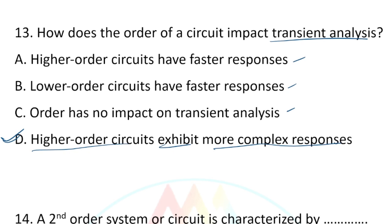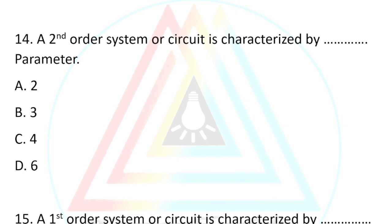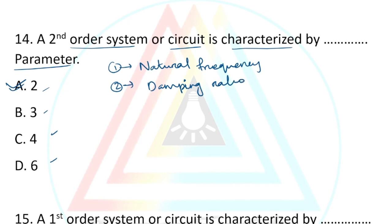The correct answer is option D — higher order circuits exhibit more complex responses. A second-order system is characterized by two parameters: number one, natural frequency, and number two, damping ratio.